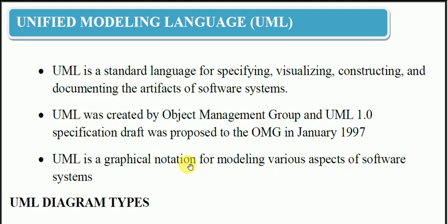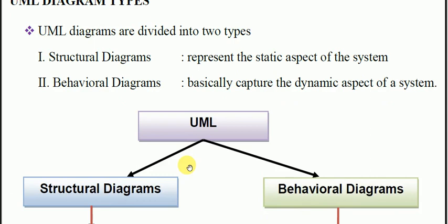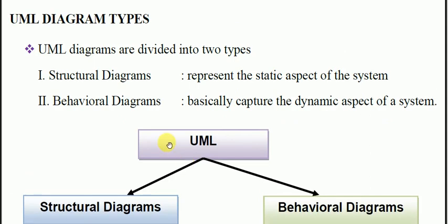UML is basically a modeling language with which we make different kinds of models. UML diagram types — how many types of diagrams are in UML? There are two kinds of diagrams. UML diagrams are divided into two types. The first is the structural diagram, which represents the static aspects of the system.